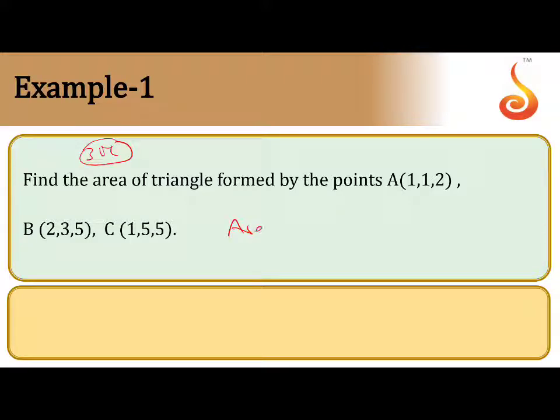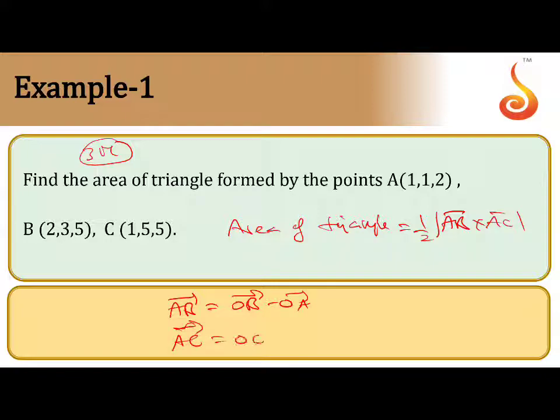So, we have formula for area of triangle, area of triangle that is equal to half into magnitude of AB bar cross AC bar. How to calculate AB vector? AB vector is OB minus OA. Now, how to find AC vector? OC minus OA. So, to find out the AB vector and AC vector, I will take the history and solve it, reviewing part.